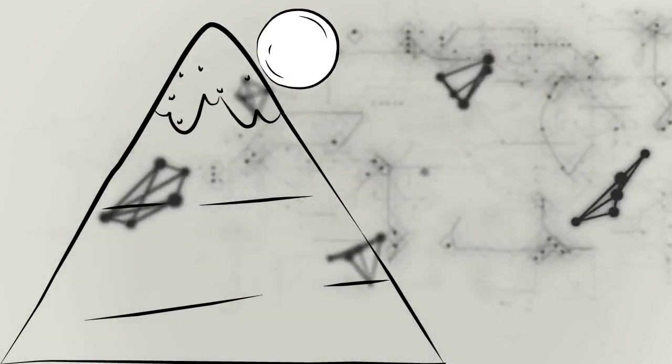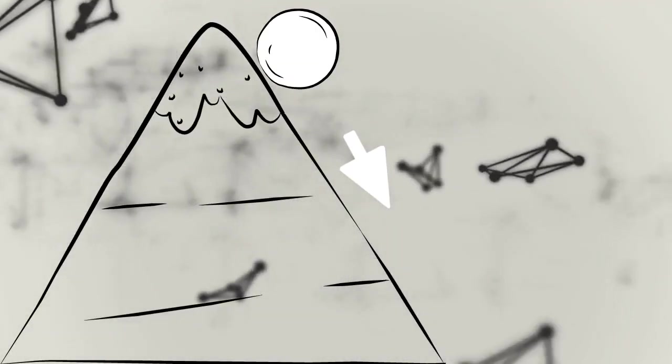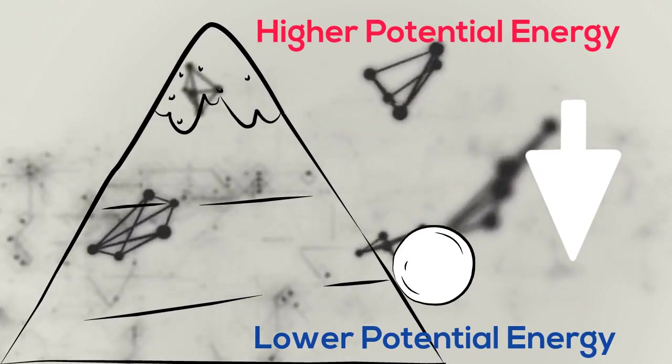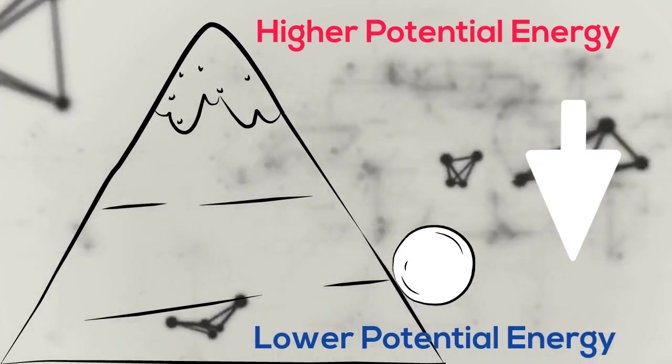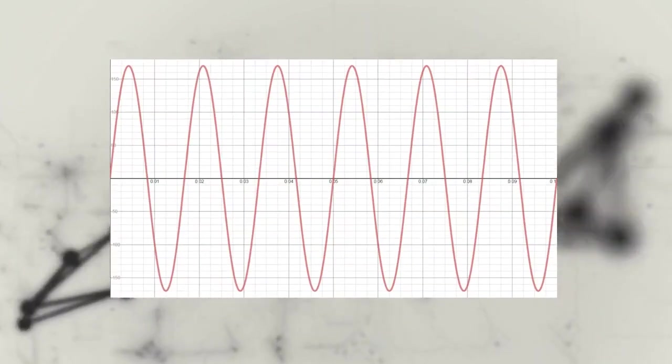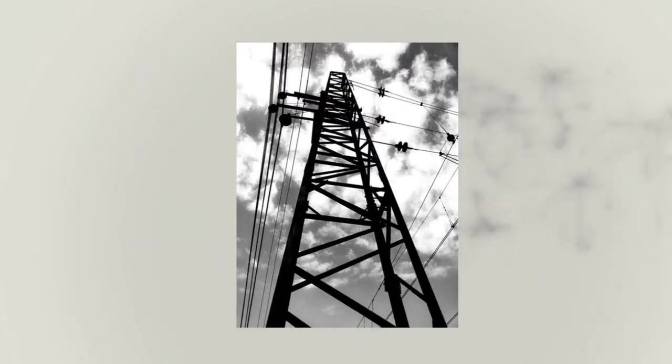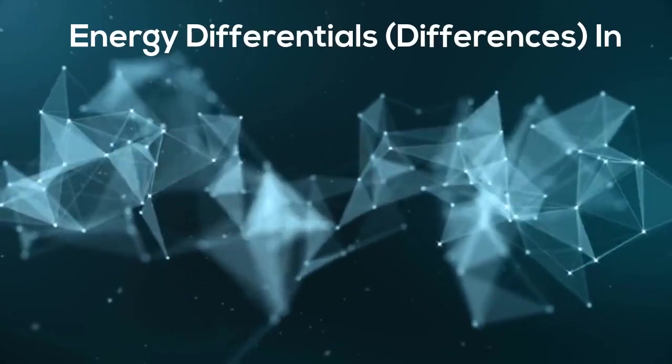In fact, when I try to teach people this concept, I'll use a lot of different examples. An example of a ball rolling down a hill and the potential energy difference between the top of the hill and the bottom of the valley, especially when you're talking about sine wave and voltage and all that sort of thing. There's a lot of different ways you can explain that. But what we're talking about is differentials in energy.